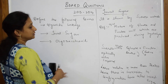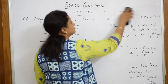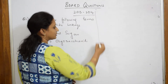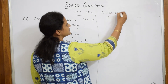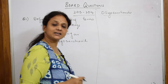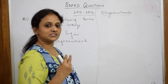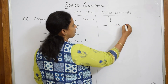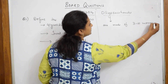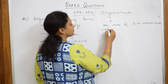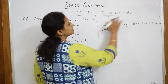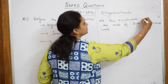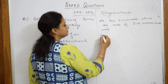Let us write for oligosaccharide. What is oligosaccharide? We have learned this in the first introduction video on the classification of carbohydrates. Oligosaccharides are saccharides made up of three to ten monosaccharide units. Saccharide means sugar. Oligosaccharides are the saccharides which are made up of three to ten monosaccharide units.